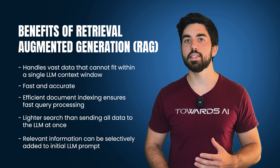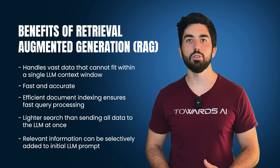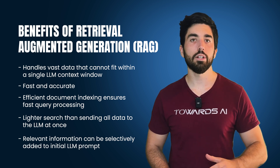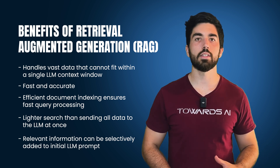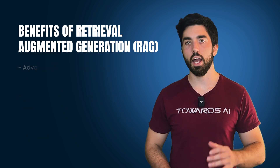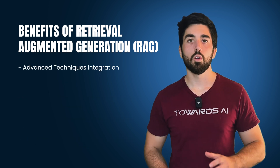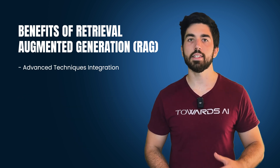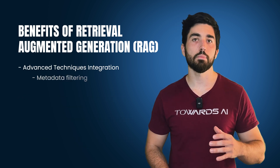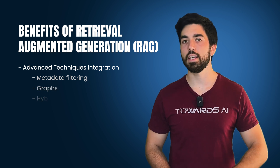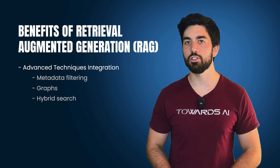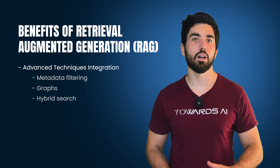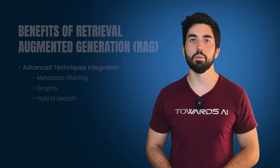With RAG, we can selectively include relevant information in the initial prompt, thus reducing noise and potential hallucinations. As a bonus, RAG allows for the use of advanced techniques and systems such as metadata filtering, graphs, and hybrid search to enhance performance and not solely depend on one LLM.